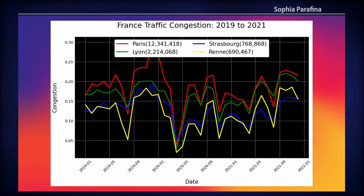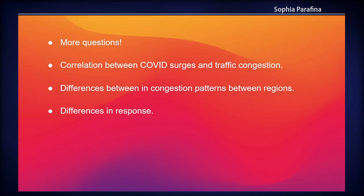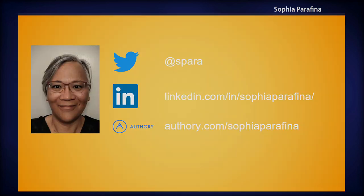You'll see the same pattern for both Germany and France — you'll also see the seasonal impact of COVID at different times. To wrap up: when I looked at it, it actually just led to more questions. There's probably definitely a correlation between COVID searches and traffic congestion, but there are differences in these congestion patterns between different regions. This could be caused by any number of different factors, especially the type of response that governments have. I had four to five minutes to do this, so there's definitely much more information available.